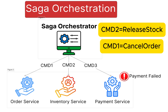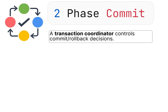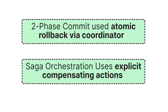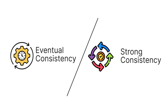This may look similar to two-phase commit, but it is not. In two-phase commit, a transaction coordinator controls the commit or rollback decisions. But in Saga orchestration, the Saga orchestrator controls the business flow and compensations. Two-phase commit uses atomic rollback via a coordinator, whereas Saga orchestration uses explicit compensating actions and follows an eventual consistency model rather than strong consistency.